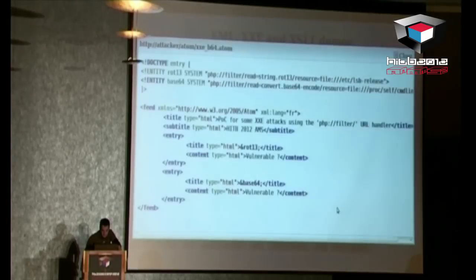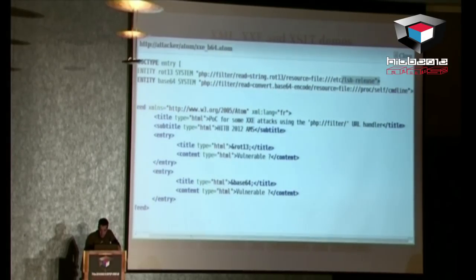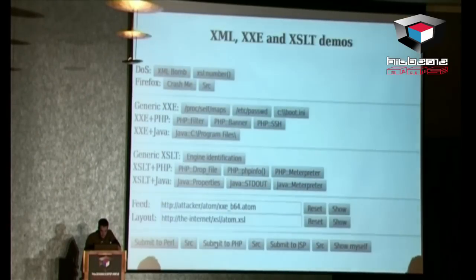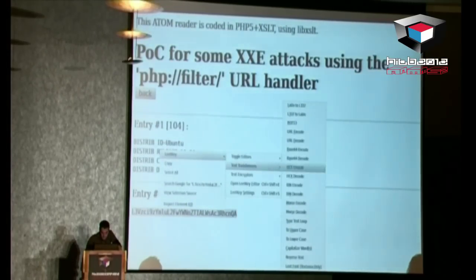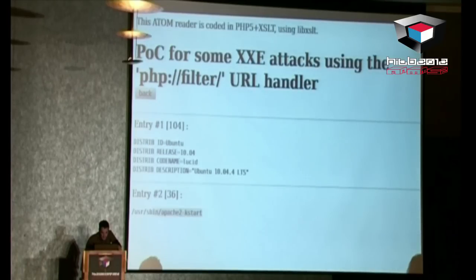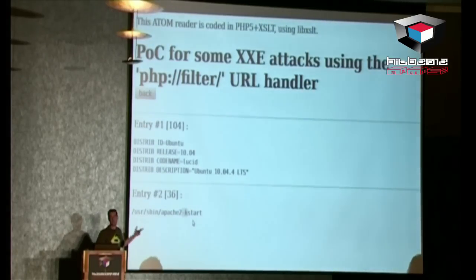Something more interesting: we will use PHP handlers twice — one for ROT13 conversion and one for Base64 encoding — and read two specific files. That's your LSB release file — no problem. And here we get the command line of the current process: Apache 2, then a null byte, then -k, then a null byte, then 'start'. It's totally impossible to read this kind of file without using the PHP trick, because it's not an ASCII file.